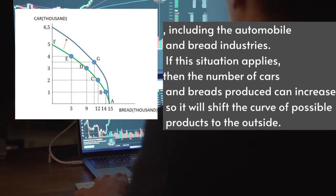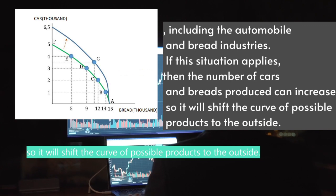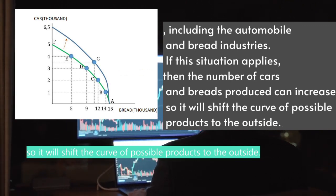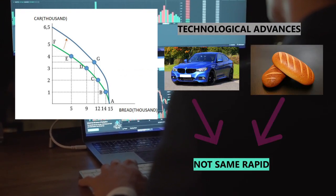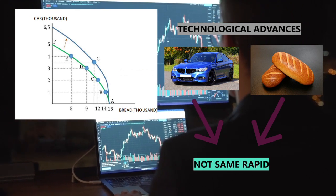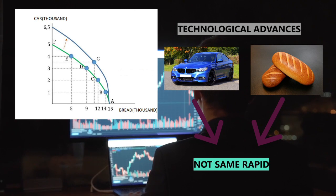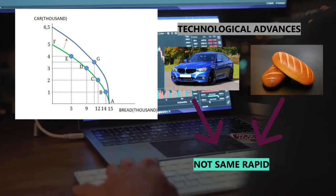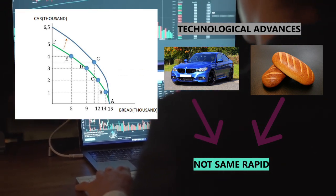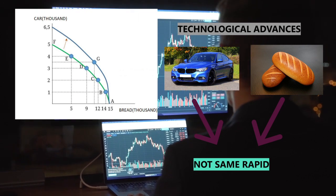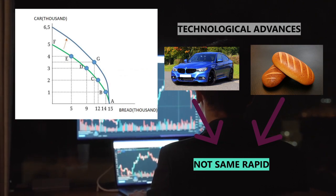The technological advances in the automobile and bread industries in general are not the same rapid. Technological development in the car industry is generally faster than technological development in the bread industry. The development of technology that is not as rapid can be described by displacement of the production possibility curve as follows.